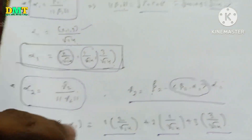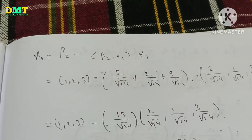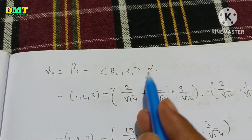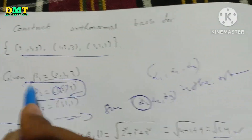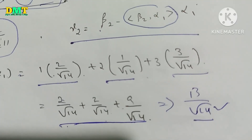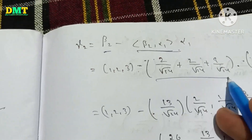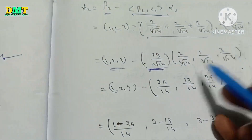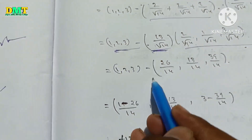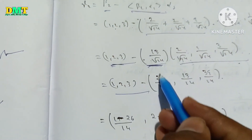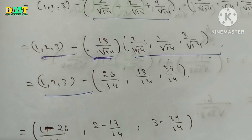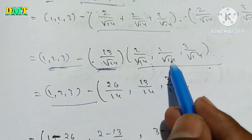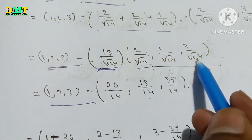We will substitute that value. Gamma2 is equal to beta2 minus (beta2 comma alpha1) times alpha1. Beta2 value minus this inner product times alpha1. The components become: 1/root14 plus 4/root14 and the same values. 13 times 2 is 26, over root14. 13 times 1 is 13, over root14. 13 times 3 is 39, over root14.